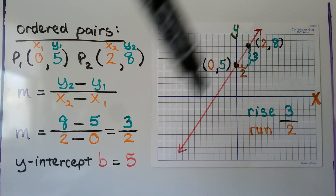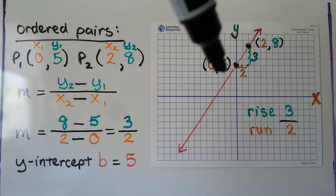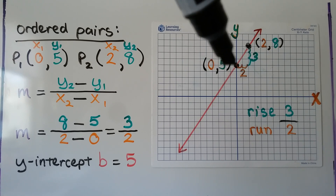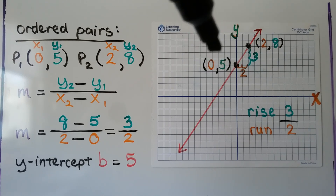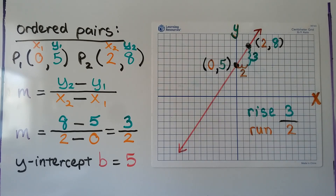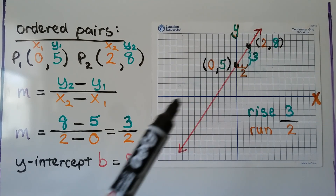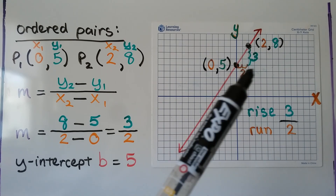This graph is rising to the right, so we know it's going to be a positive slope. We can see where it's intersecting the y-axis — it's at 1, 2, 3, 4, 5. It's where x is 0, and whatever that y-value is, that's the y-intercept. So we know our y-intercept is 5 just by looking at the graph. We can pick two points where the lines intersect and count the rise and the run.